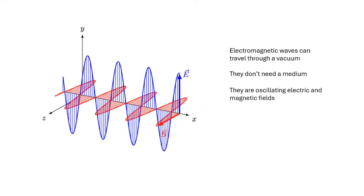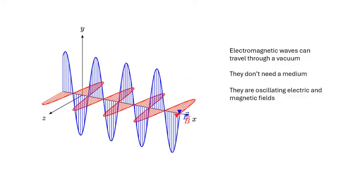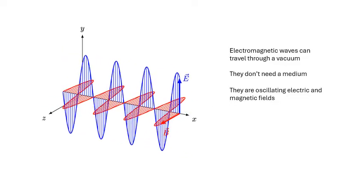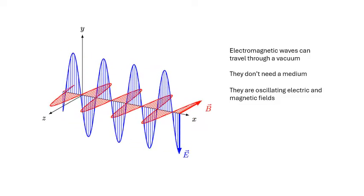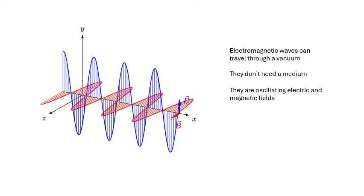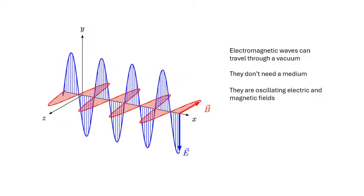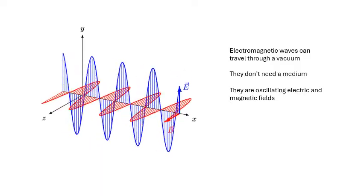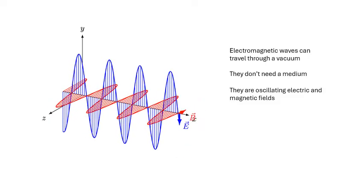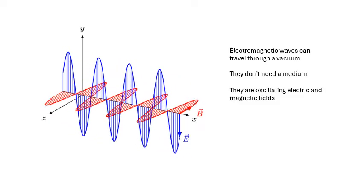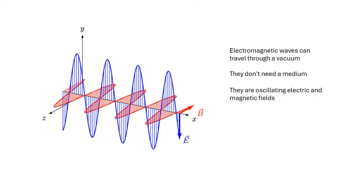Electromagnetic waves — light, radio, ultraviolet, X-rays — can travel through a vacuum; they don't need a medium. What oscillates is electric and magnetic fields. Because electric and magnetic fields can exist in a vacuum, EM waves don't need particles to oscillate — that's why they're called electromagnetic waves.